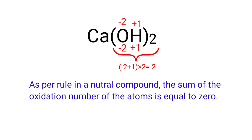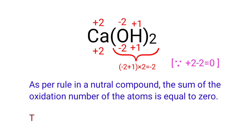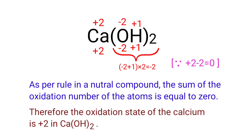So, the numbers along the bottom must add up to 0. So, the number under Ca must be plus 2. So, we can write the oxidation number of calcium is plus 2. Therefore, the oxidation number of calcium is plus 2 in Ca(OH)₂.